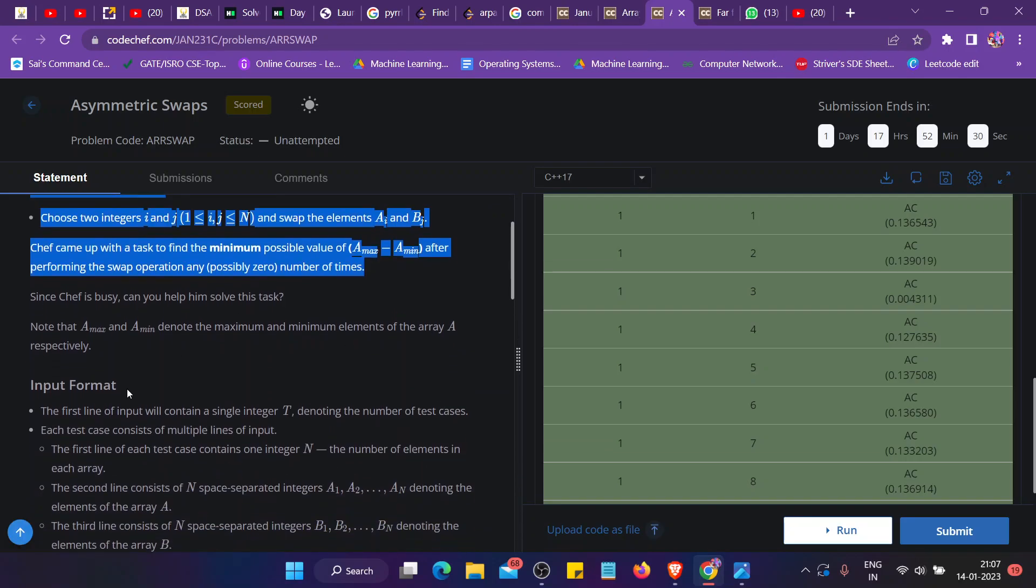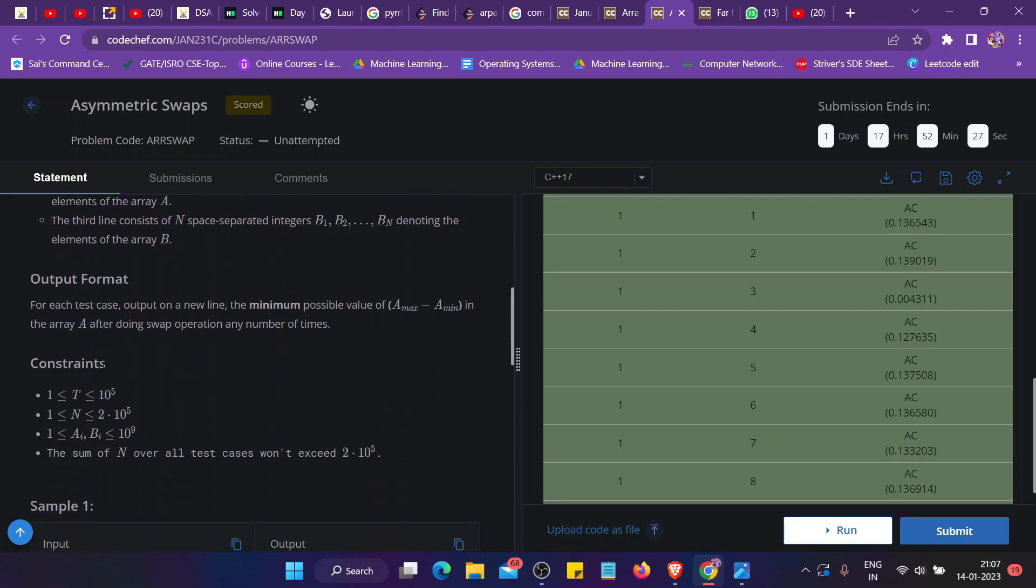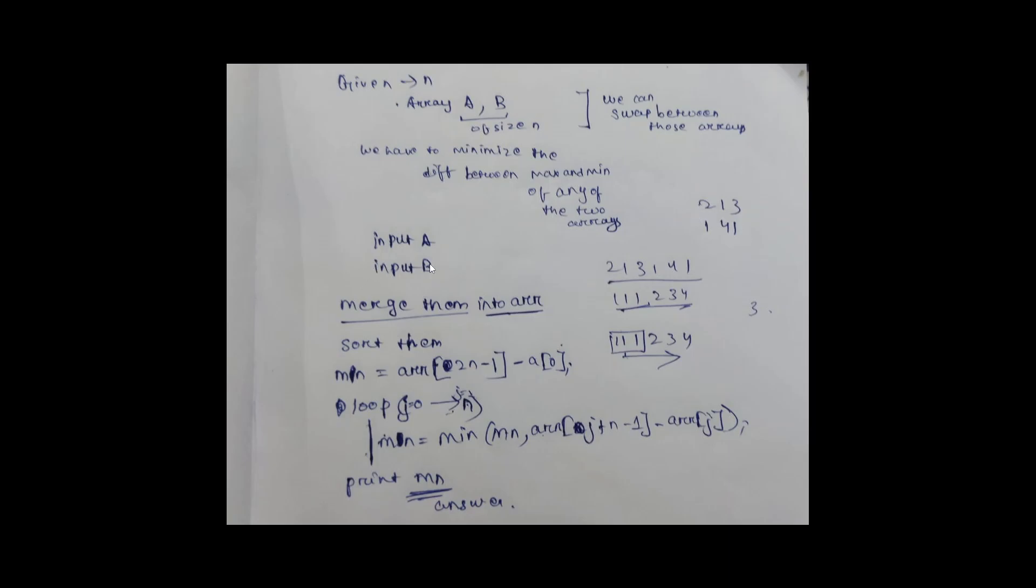We can understand this with an example. If we have array A as 2,1,3 and array B as 1,4,1, we merge both arrays together to get 2,1,3,1,4,1, and then we sort them.